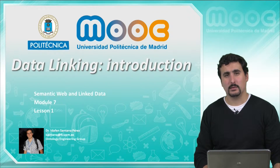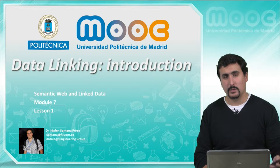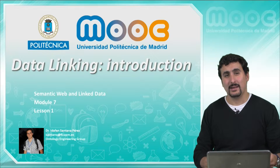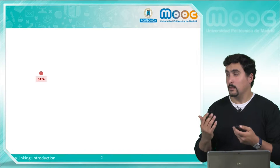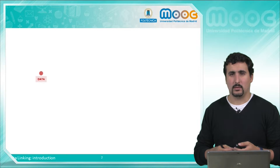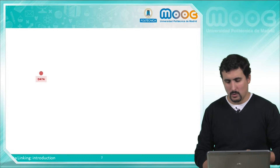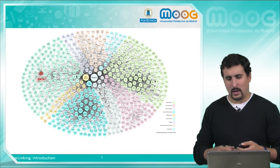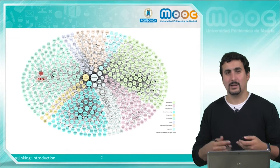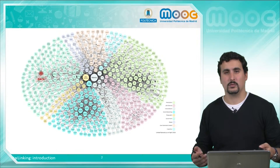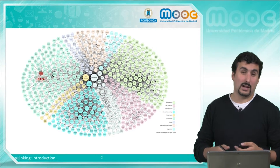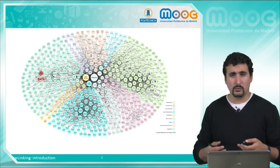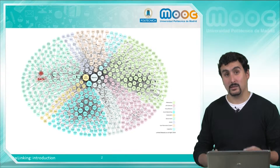Hi all and welcome to this seventh module of the course. In this series of videos we are going to introduce the data linking process. Once we have generated our dataset based on any given data source, we should start thinking about how to link this dataset to other data sources, so as to guarantee that our data is not isolated, making it more useful, contextualized and discoverable.